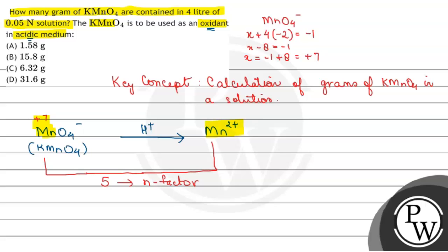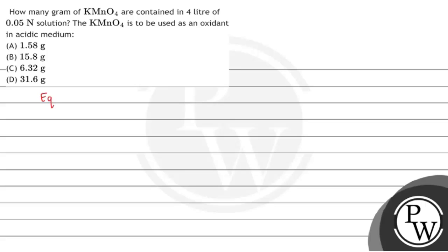Now we can find the mass using the formula of equivalent mass. We know that equivalent mass is given by molar mass divided by N-factor. So equivalent mass for KMnO4, where the molar mass is 158.034 divided by N-factor which is 5, gives us the equivalent mass of 31.6.